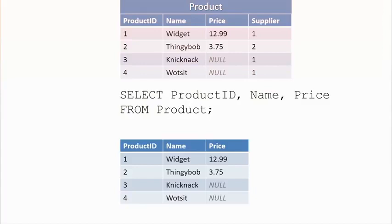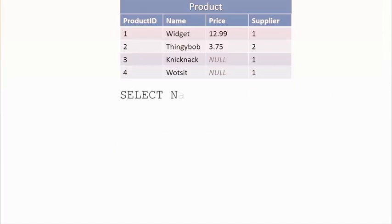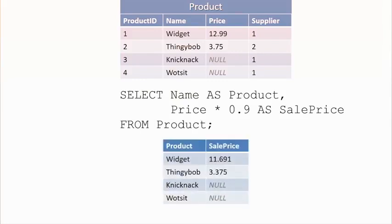Typically you'll specify the specific columns that you want — product ID, name, and price from the product table. In my results set, that's exactly what I get. The order in which I list them in the SELECT clause determines the order in which they come back. In this case, I've brought back name as 'product' — I'm giving it a different name in the results set. And for price, I'm not just bringing back the price — I'm bringing back price times 0.9, i.e., taking 10% off, calling that the 'sale price'.